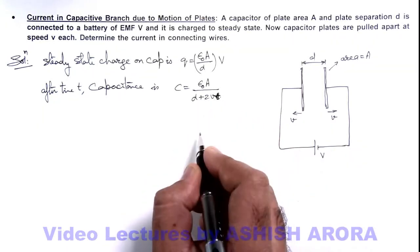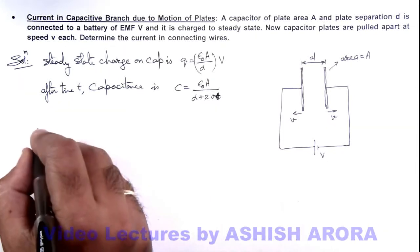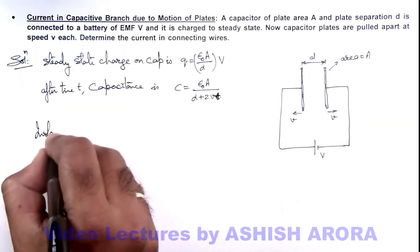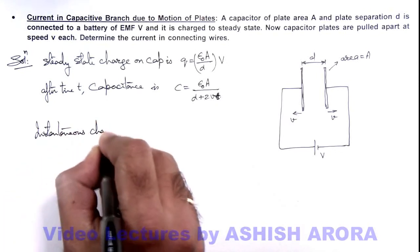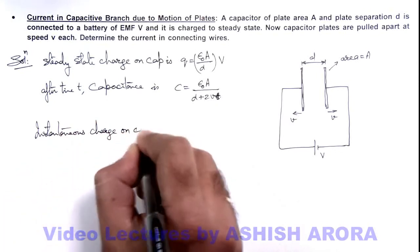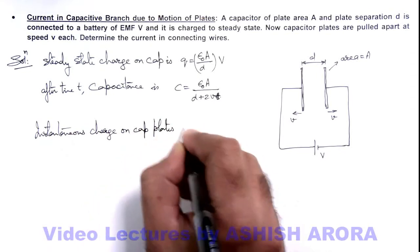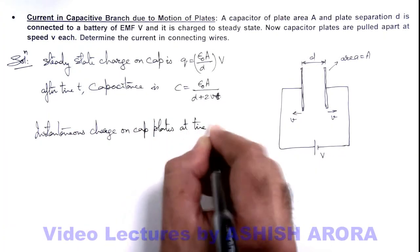Now in this situation, we find out the instantaneous charge on capacitor plates at time t.